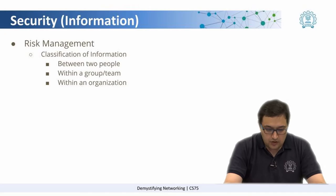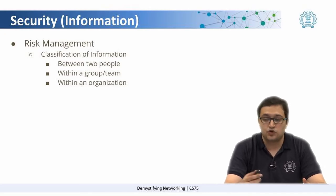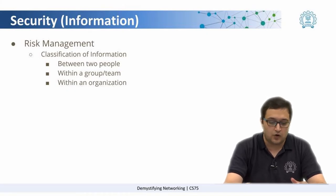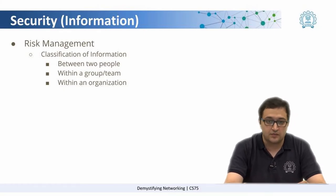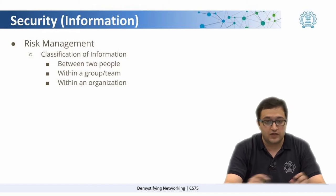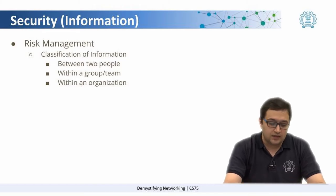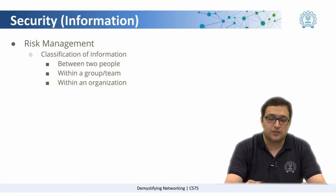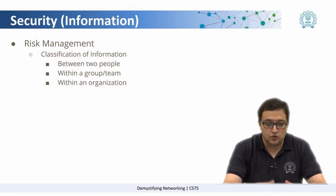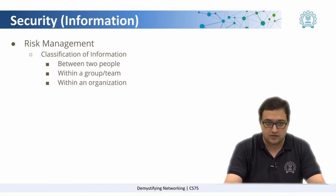Let us look at examples. If an HR person is talking to an employee about something confidential about the employee, it is a confidential communication happening between the HR and the employee — confidential only between those two. Another level could be a particular team working together that has user access information about the client they serve.